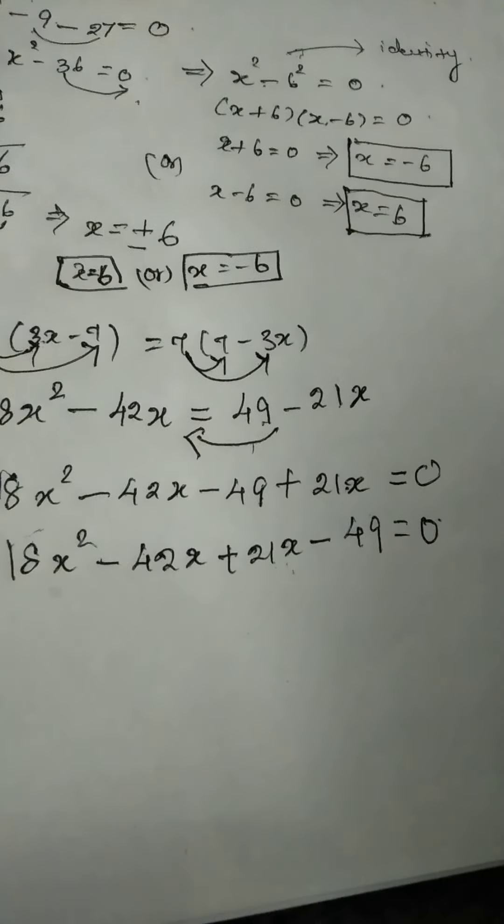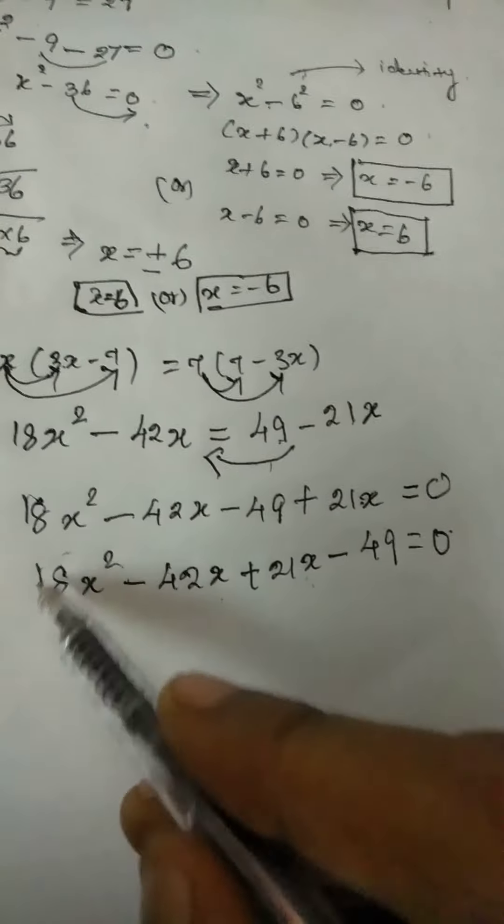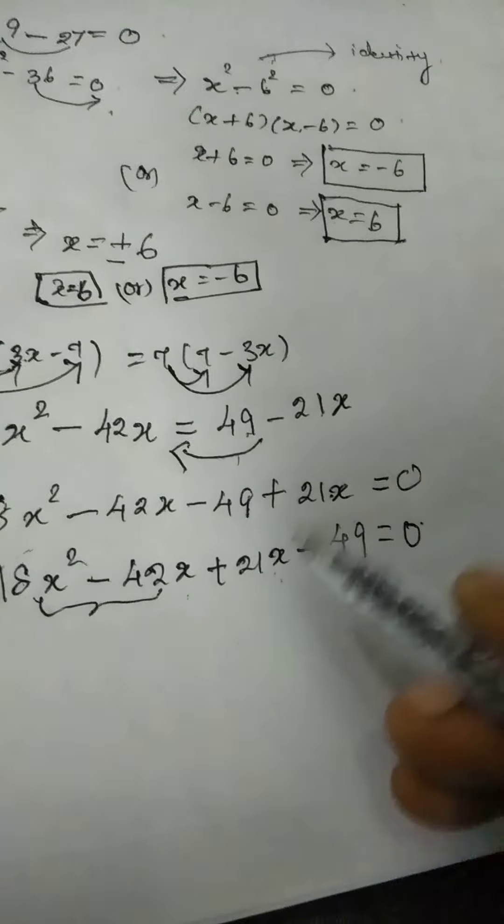Because the splitting the middle term we have the middle term is x value. So no need to use that product and sum method to find out here.